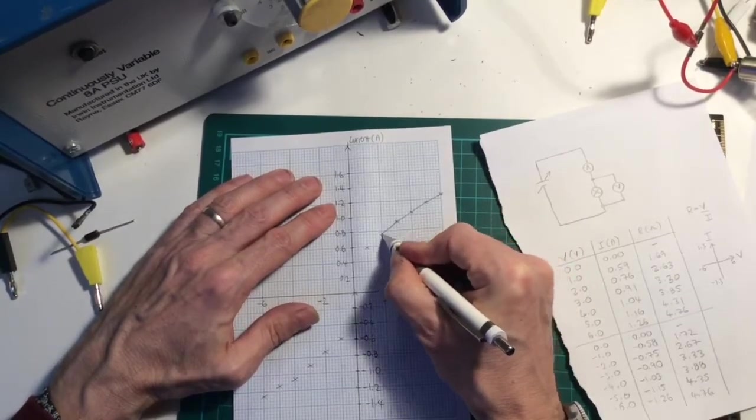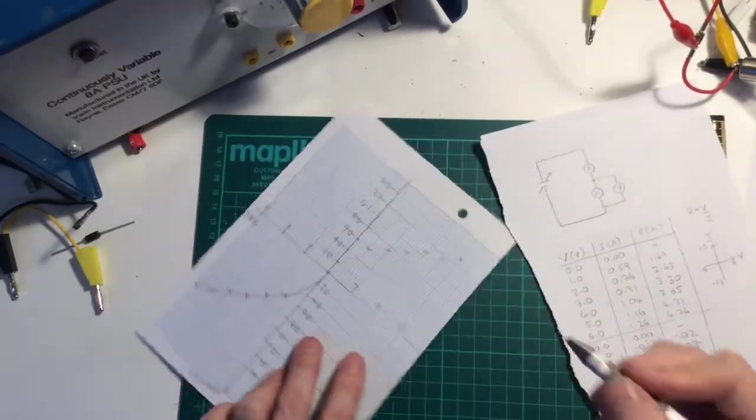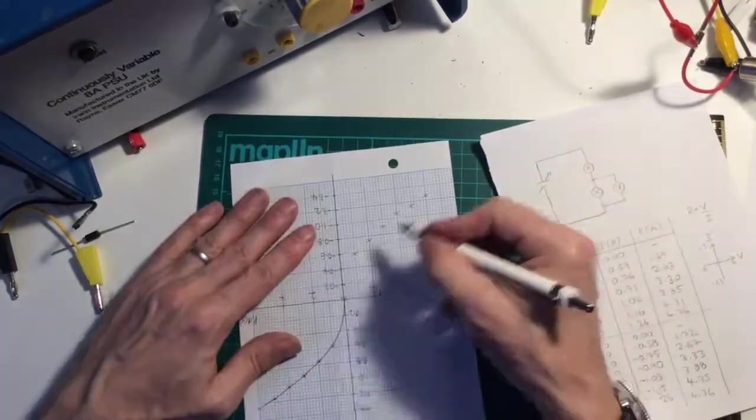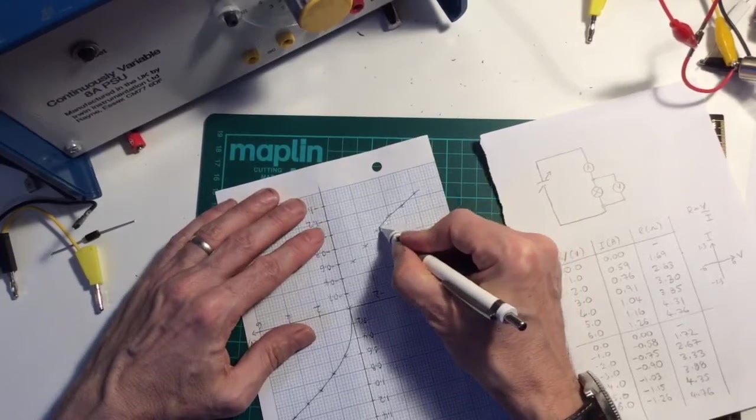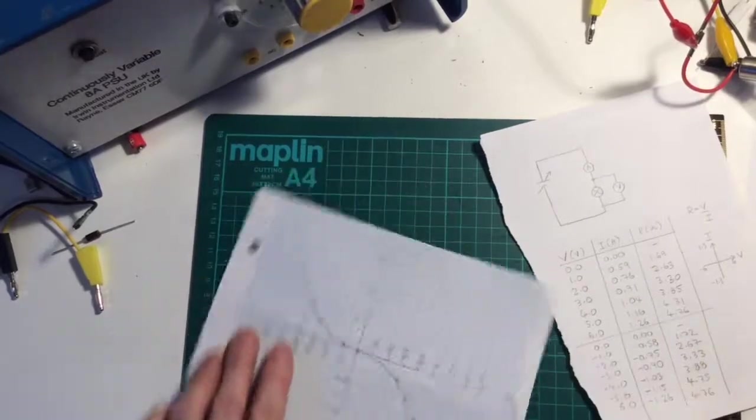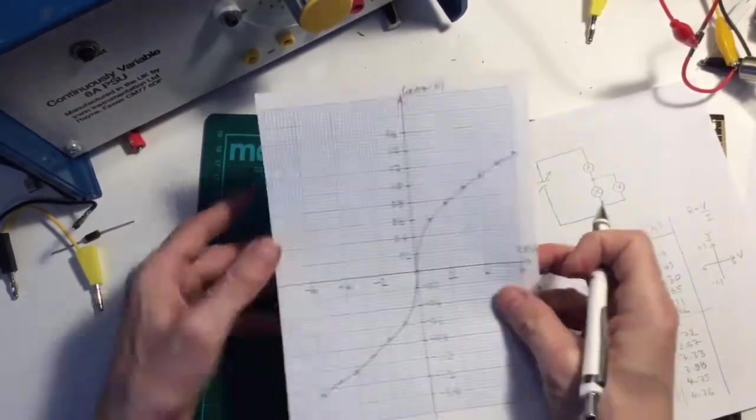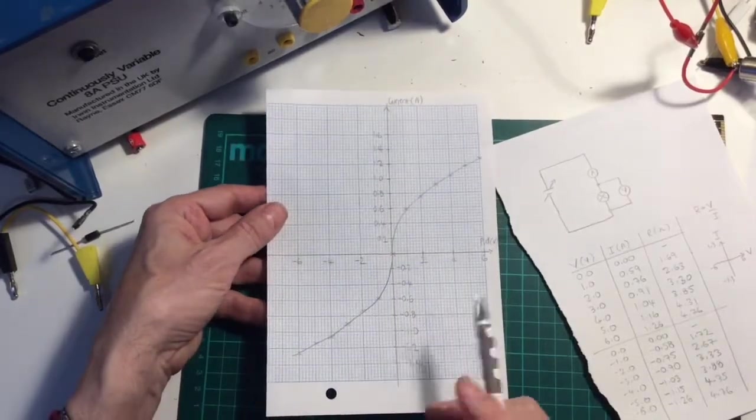So smooth curve through there, finishing down here. And then the second part of the curve, I'm going to basically repeat, going the other way. Okay, so that is my smooth curve through all those points. A little bit wobbly there, but it's not too far off.